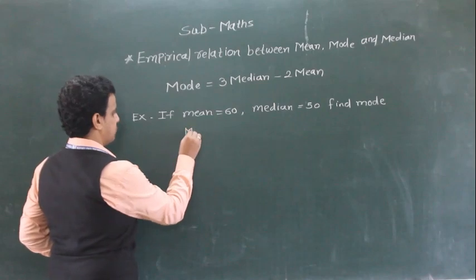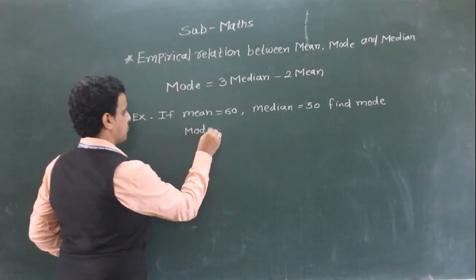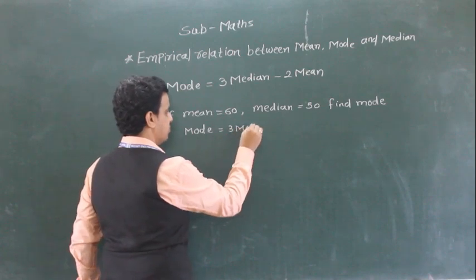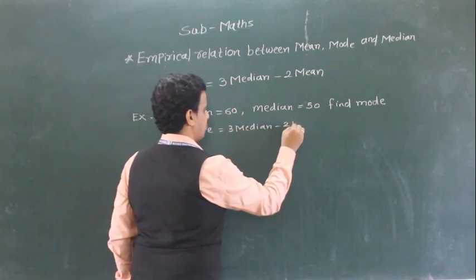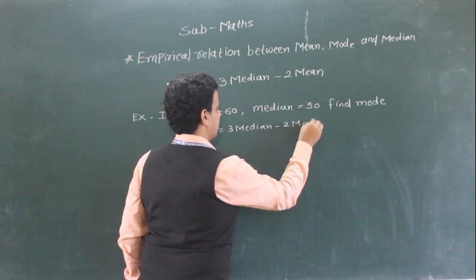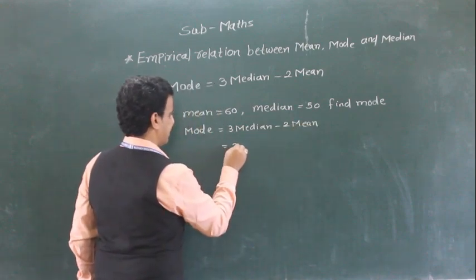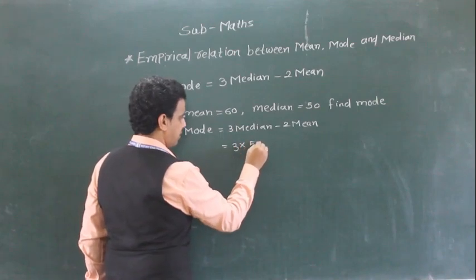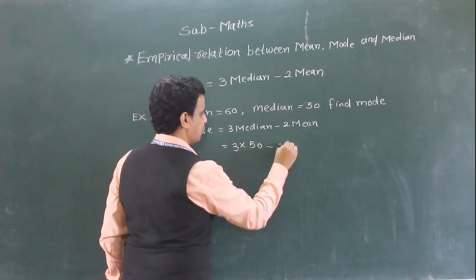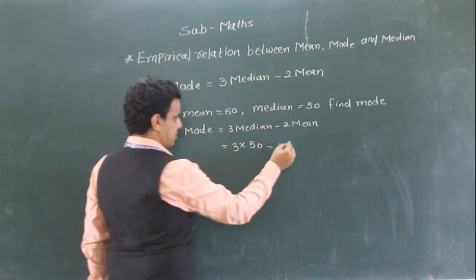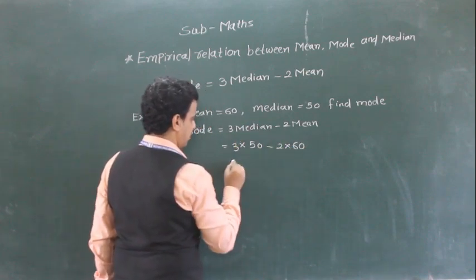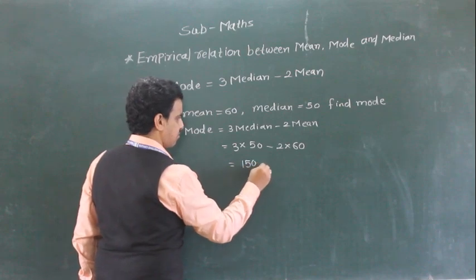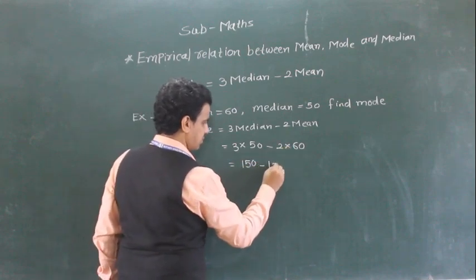So mode is equal to — first I am writing this relation — mode is equal to 3 median minus 2 mean. So 3 into median is 50, that is 3 into 50 minus 2 into mean, which is 60, so 2 into 60. That gives 150 minus 120.